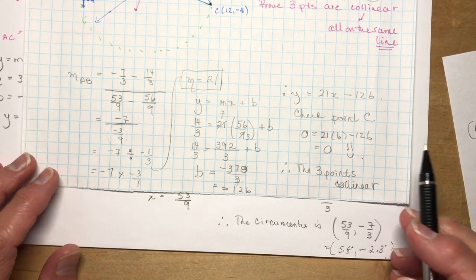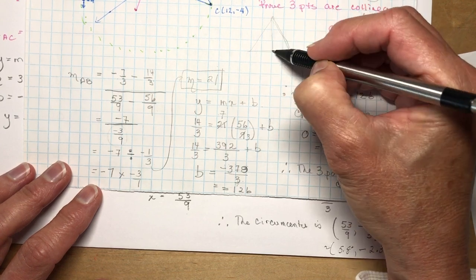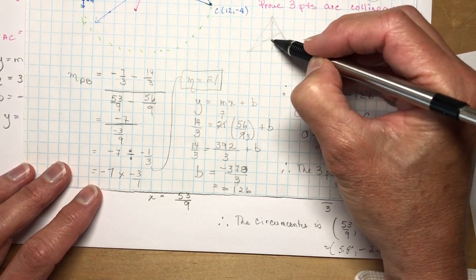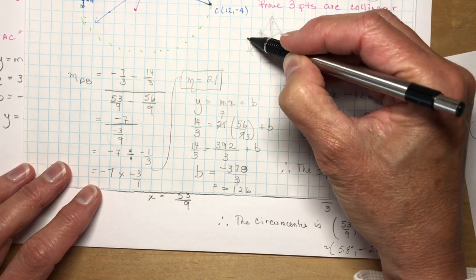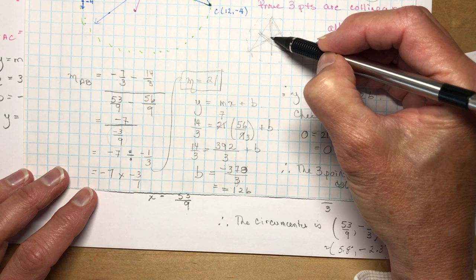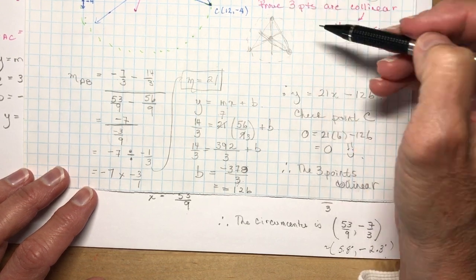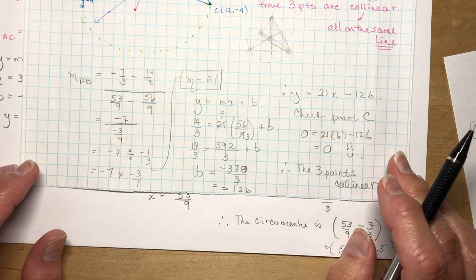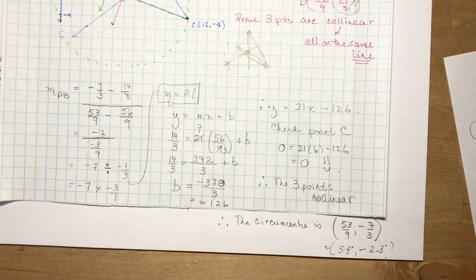This is a fundamental property: the orthocenter, circumcenter, and centroid of any triangle are always collinear — they lie on what's called Euler's line. One final note: for an equilateral triangle, the orthocenter, circumcenter, and centroid are all the same point, so you just add up coordinates and divide by three for all three. That's the end of analytic geometry — hope you're enjoying it, don't forget to subscribe, and check out grade 11 and 12 content as well!